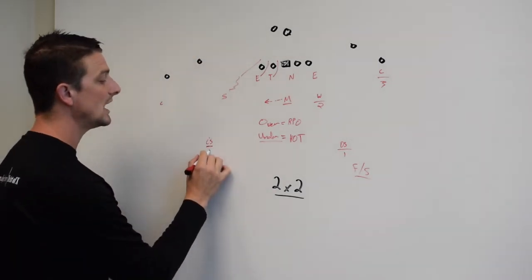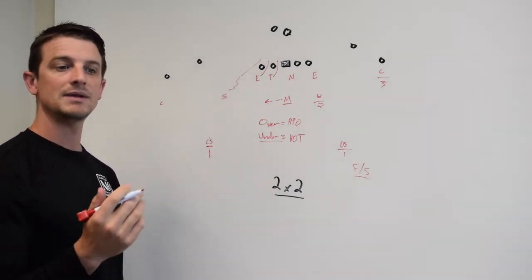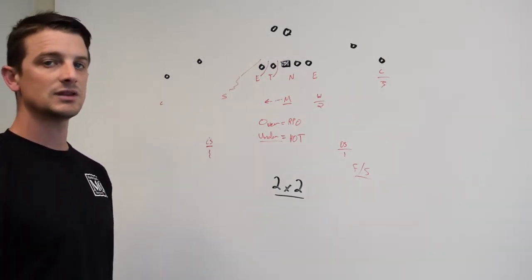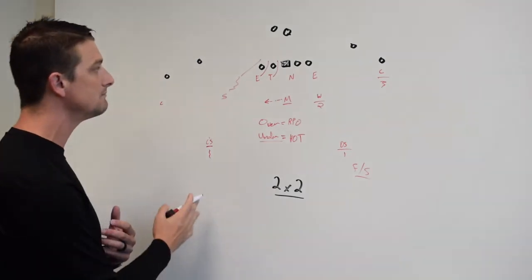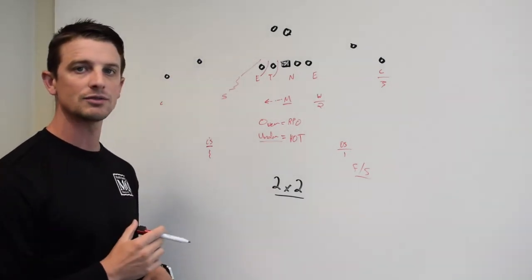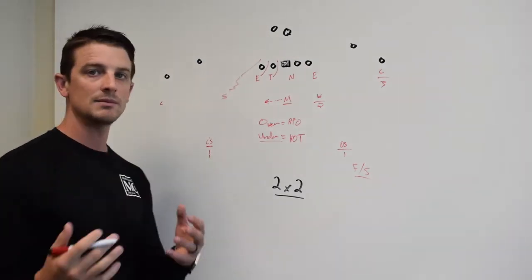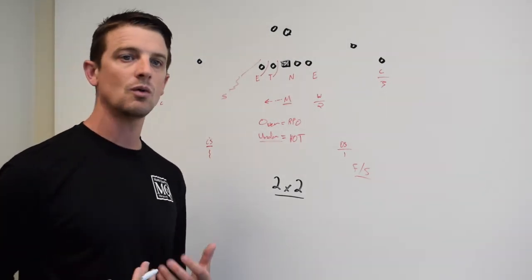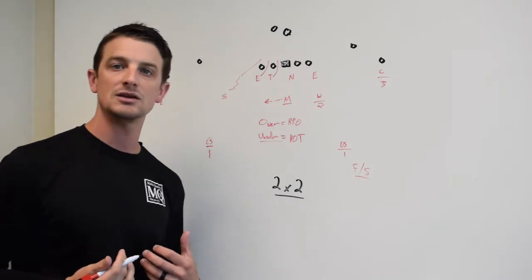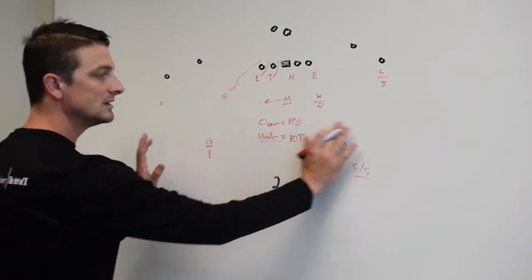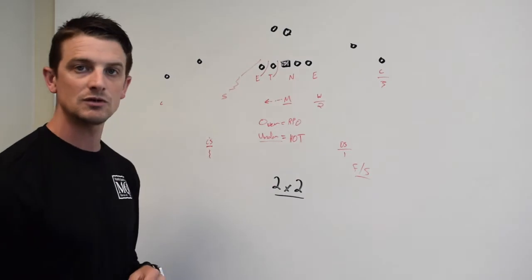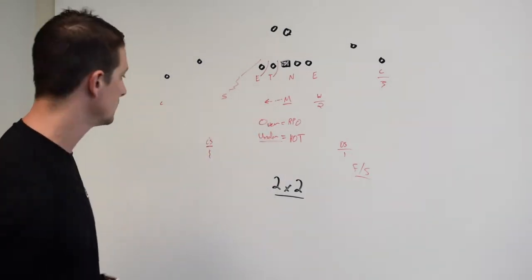We may even get an out route by them, or some sort of hitch screen. This is where you want to have over. Over tells the safety, 'I'm now going to be over top. I'm going to sit on top.' Now, this is different than cloud. He is not going to fast bail. I don't need him bailing out if I know I'm going to get a quick throw. If I'm going to get a quick throw or screen, I want him coming off and stepping off just as he would in quarters, and he's going to do it from 10 yards. He's not even going to move.